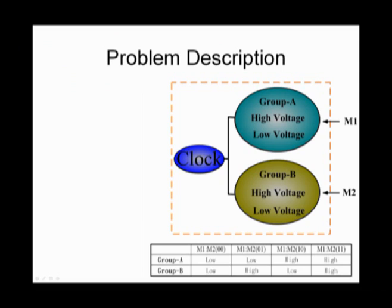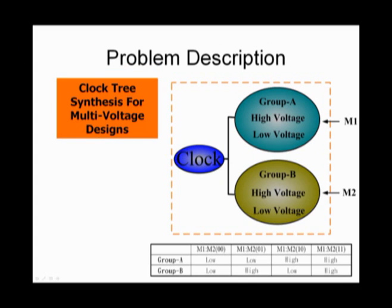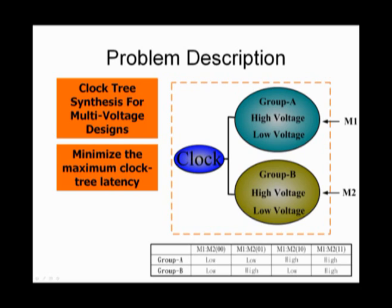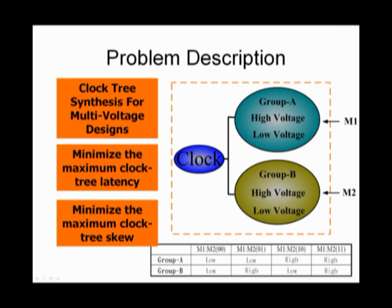This is an example. The multi-voltage design has two groups. Each group may be in high voltage or in low voltage. Therefore, there are four possible conditions in the table. So, it needs a clock tree synthesis for multi-voltage designs. The objective is to minimize the maximum clock tree latency and minimize the maximum clock tree skew.